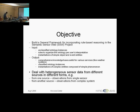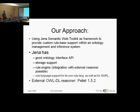In our approach, we took Jena, which has been developed by HP. It's a Java-based framework providing an API to work with OWL and RDF documents, and it has its own rule engine. Using its rule engine, we can do custom rules inferencing. An important thing is it has support for the semantic web rule language, and we can also integrate an external reasoner with it alongside its own custom rule engine, so we can have two-way inferencing plus our custom rules.